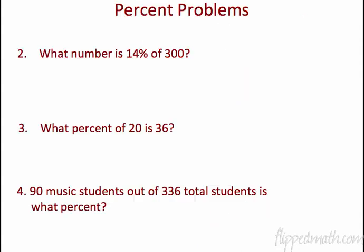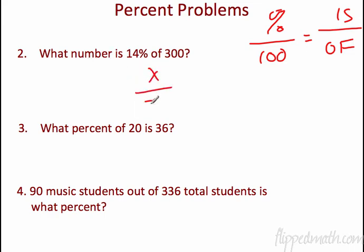Next problem. Percent problems. So what number is, we're going to use, let me write it up here. We got the percent over 100 is equal to is over of. Remember, that's how we learned it. So what number is 14% of 300? So the is is an X. The of is 300. The 14%, that means over 100. There you go.